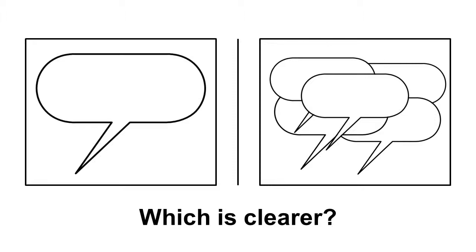If we run with this definition and assume that the goal of an artist is to communicate, then it seems pretty intuitive to say that, if all other things are equal, a work that tries to convey a single idea will be more effective than a work that tries to convey multiple separate ideas. In the second case, each of the ideas are weaker and more diluted than they would be if they were the focus of their own individual work.